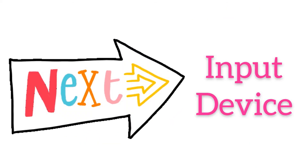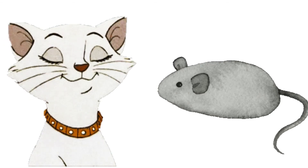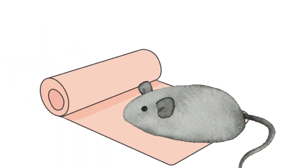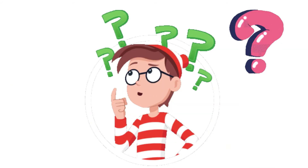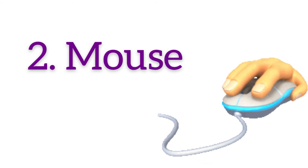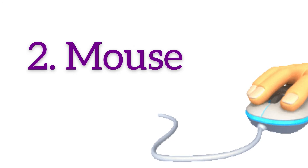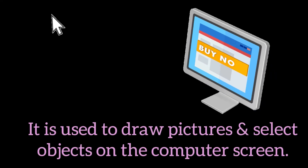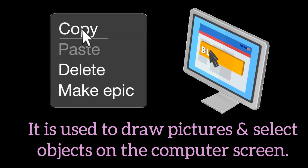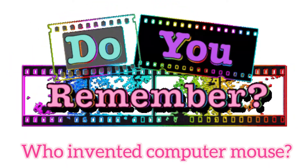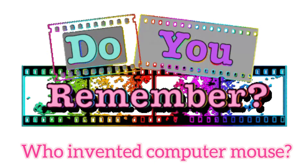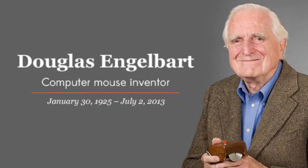Now let's talk about the next input device. I'll give you a hint: I am not afraid of a cat, sit on a mat, have a long tail — who am I? Yes my dear kids, it's a mouse! Mouse is also an input device which is used to draw pictures and select objects on the computer screen, and it is also known as a pointing device. The inventor of mouse is Douglas Engelbart.